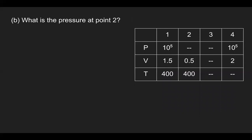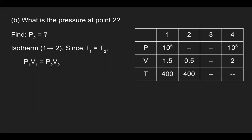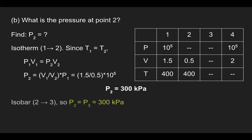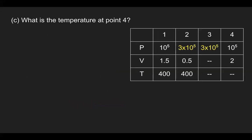Next we find the pressure at point two. From one to two it's an isotherm, so temperature is constant, meaning we use P1V1 = P2V2. Substituting the known values from the chart and solving for P2, we get 300 kilopascals. Since two to three is an isobar, P2 equals P3, so P3 is also 300 kilopascals.